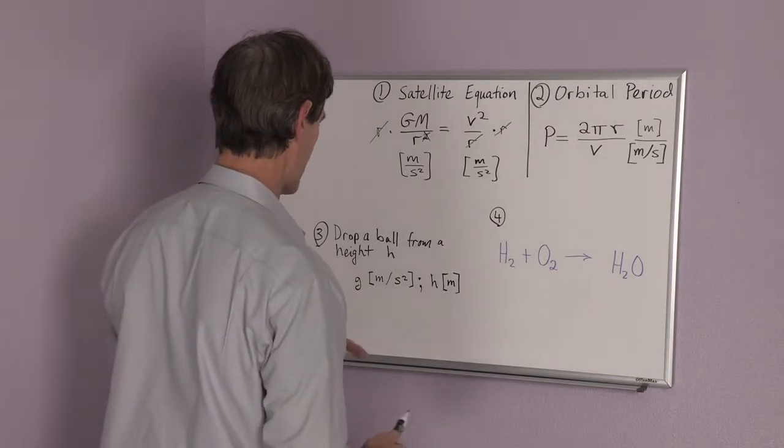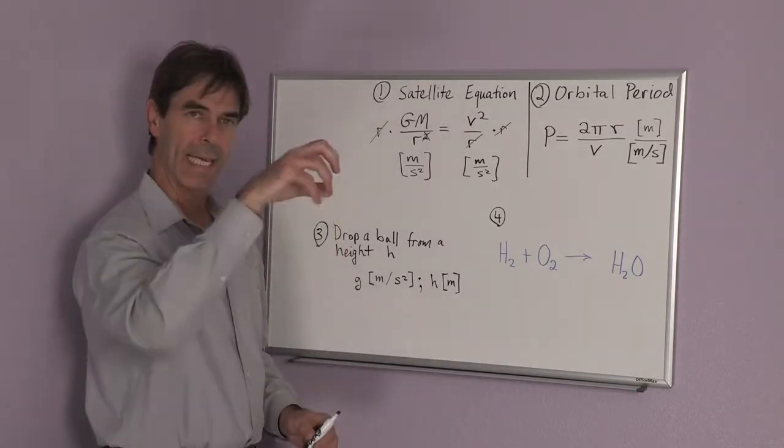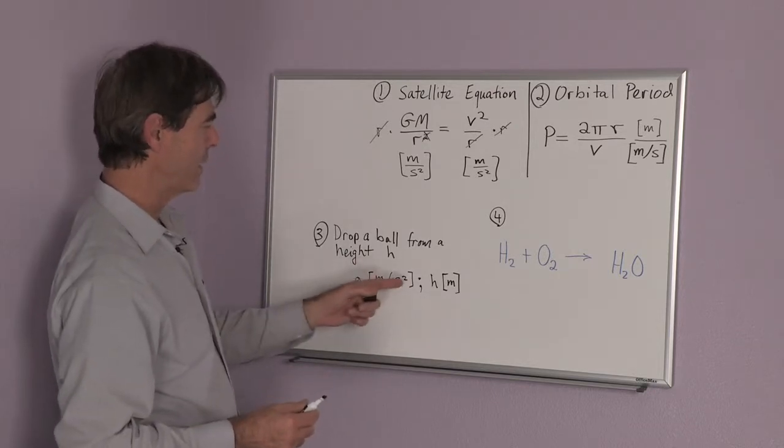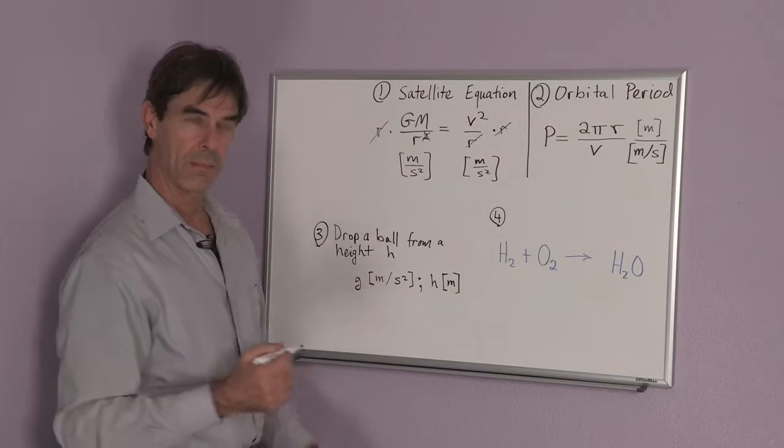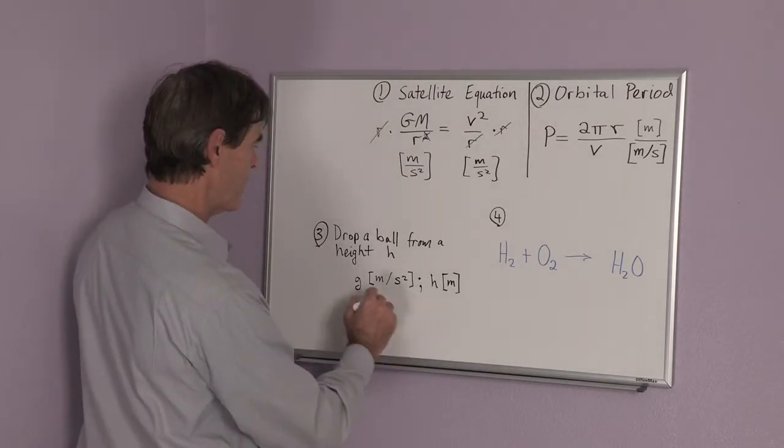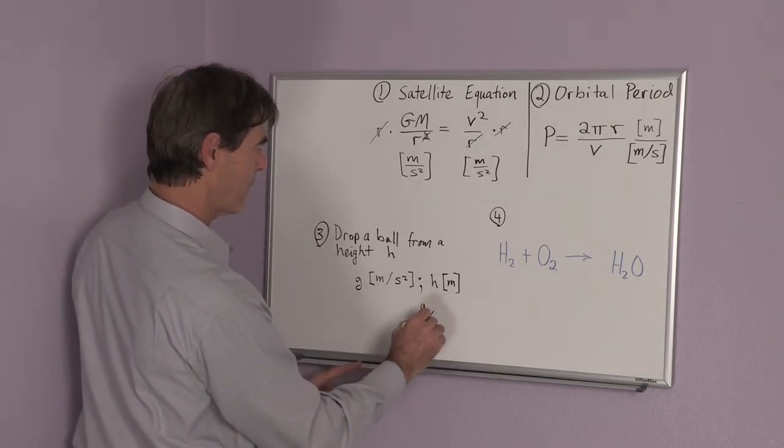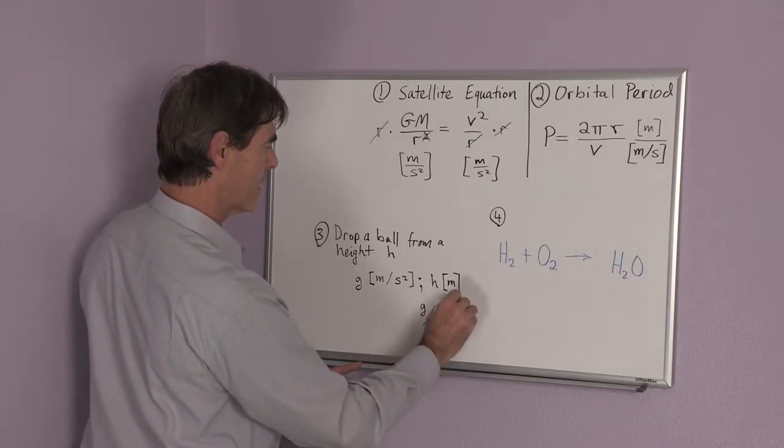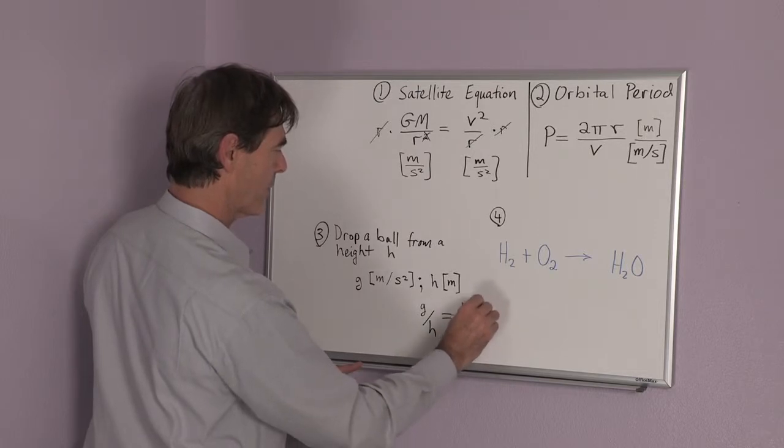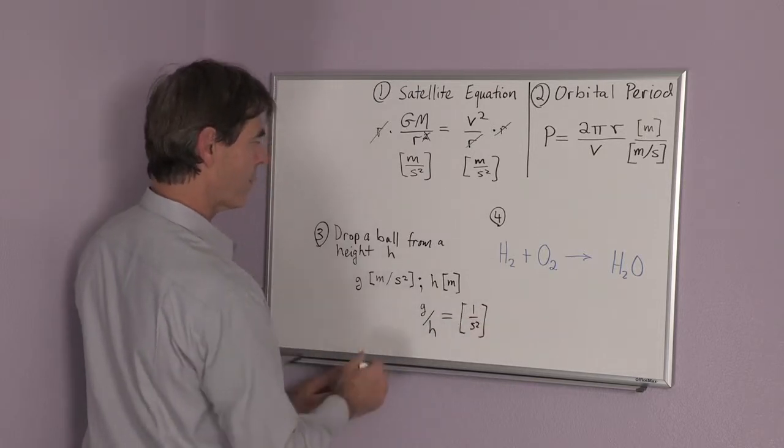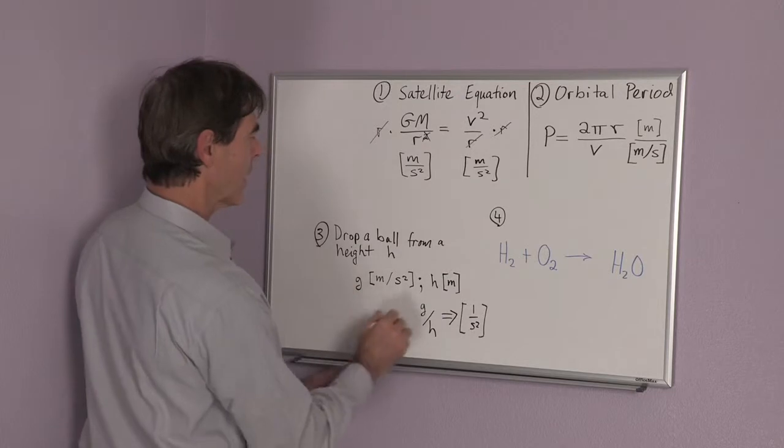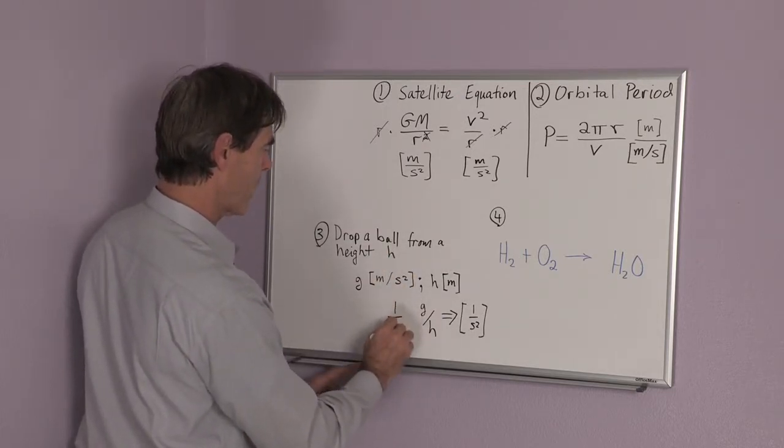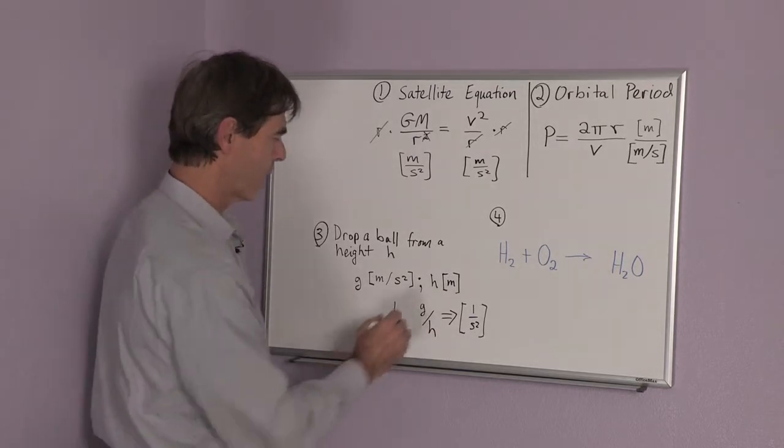Another example, you drop a ball from a height h. The acceleration of gravity is again in meters per second squared. And the height is given in meters. So now, if I take g and divide by h, I get something that has the units of 1 over second squared. So the time that this ball would drop should be something like 1 over t squared.